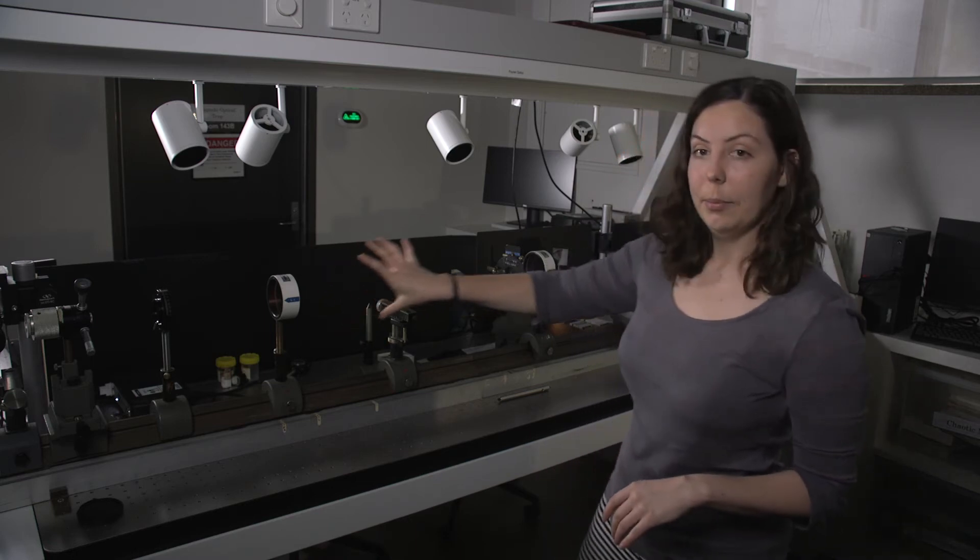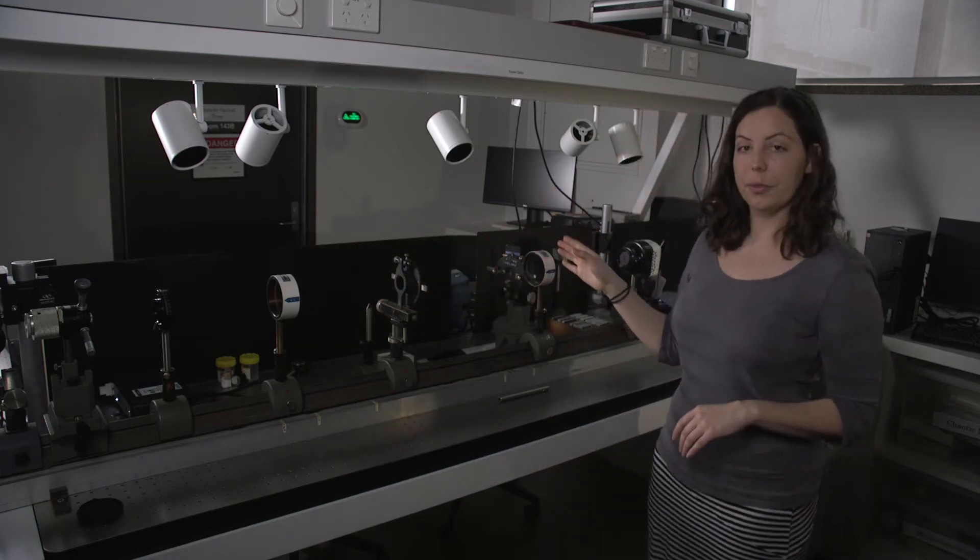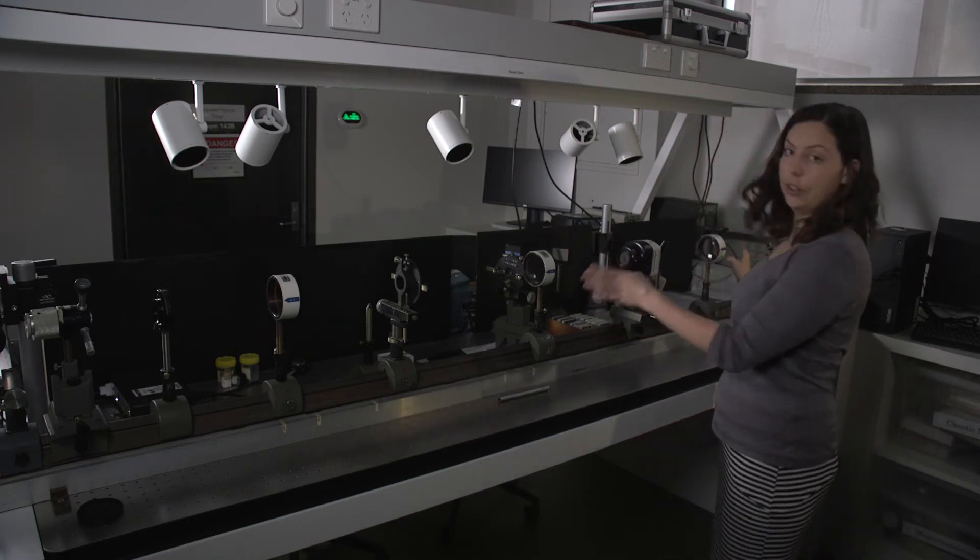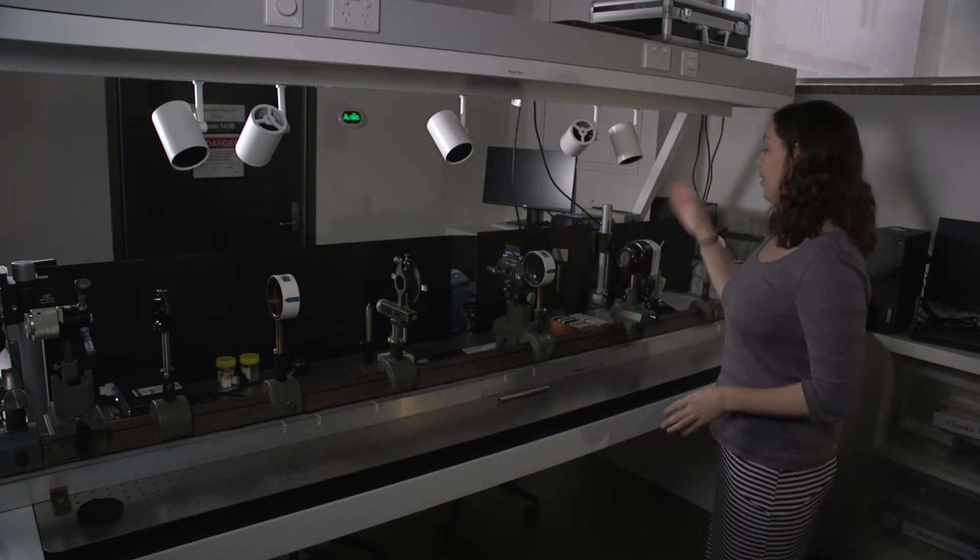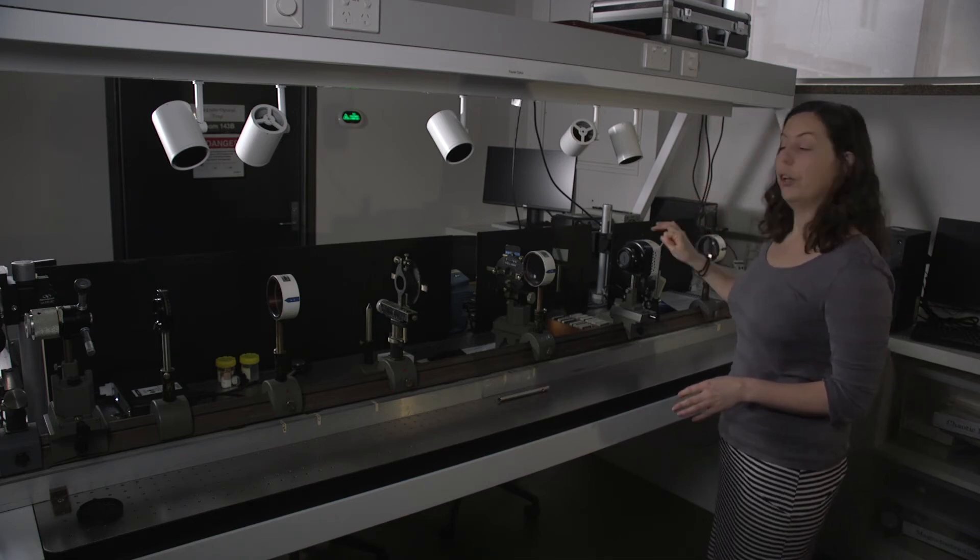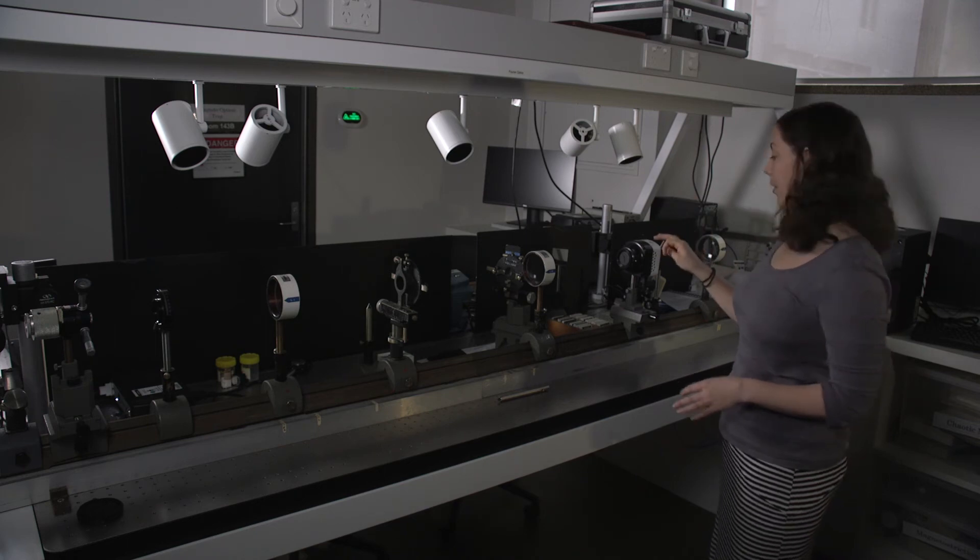The laser passes through the object and reaches lens two. Lens two focuses the beam in the transform plane. In the center of the transform plane we have our point where we will inspect the diffraction patterns.